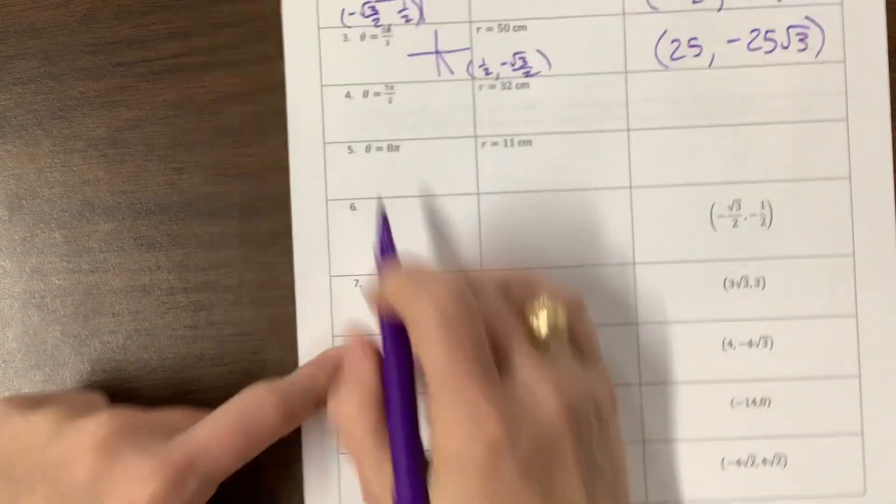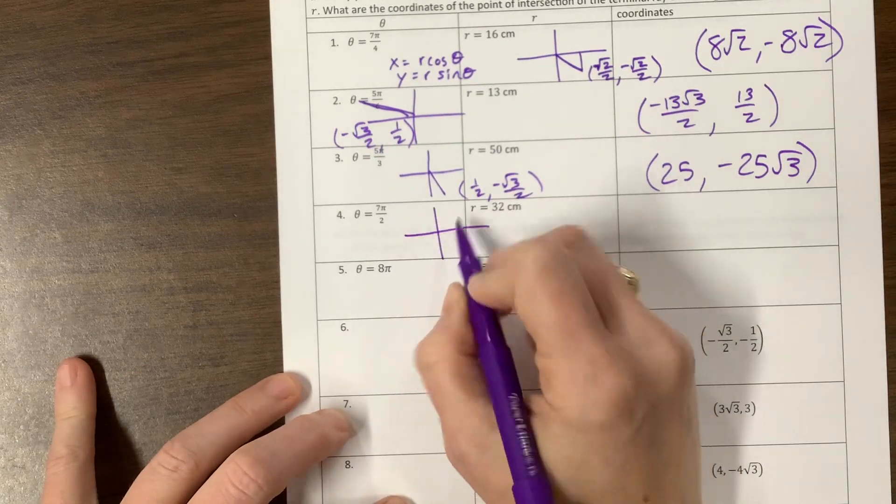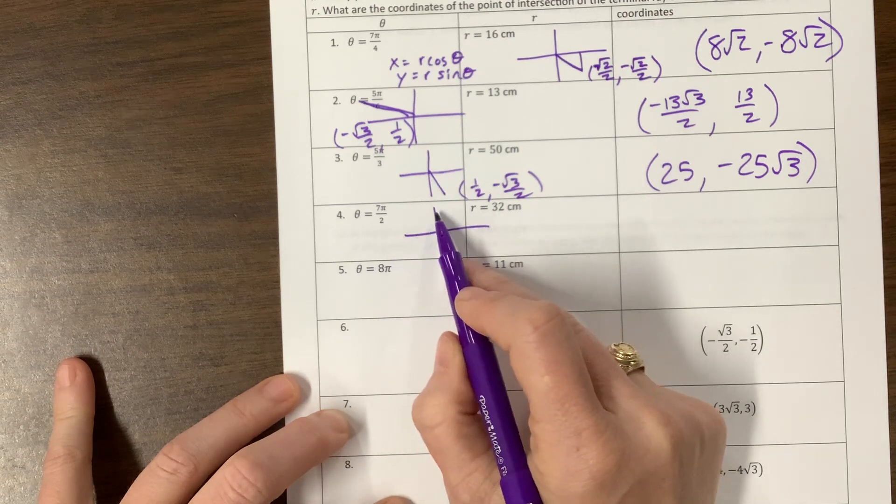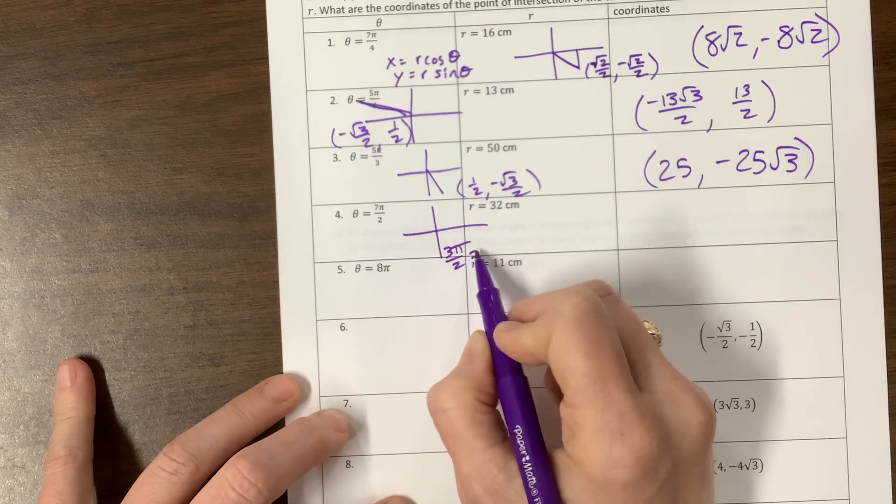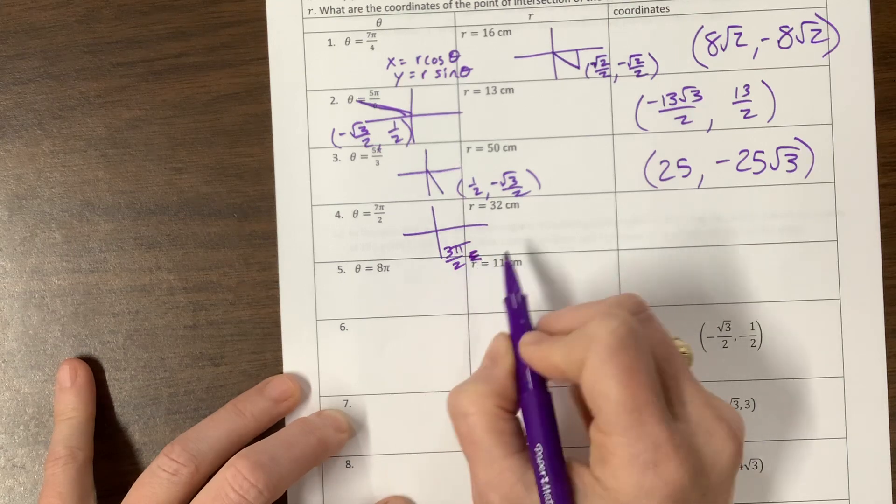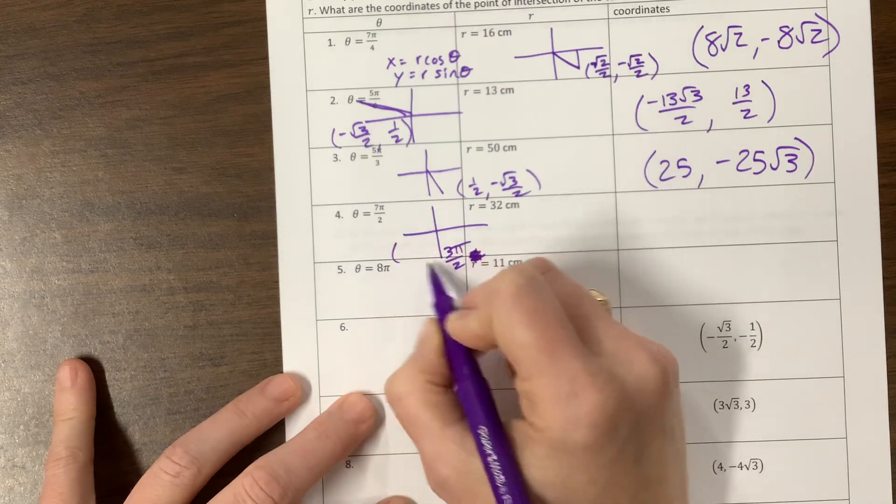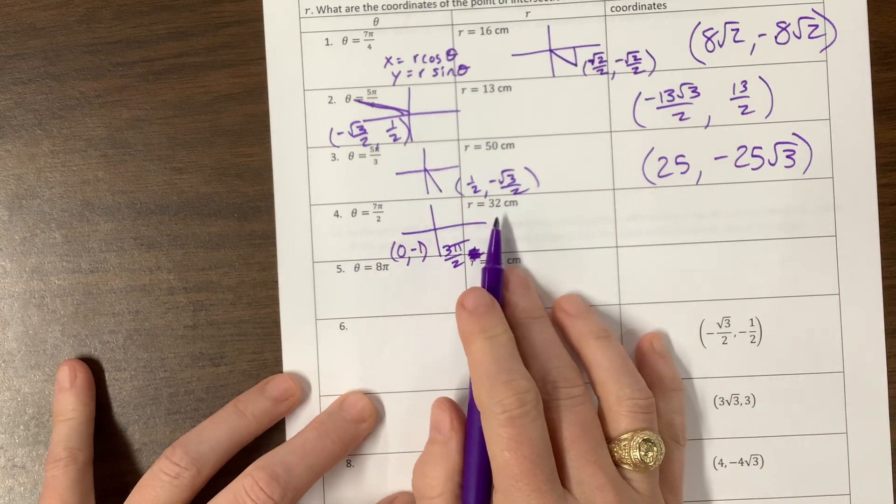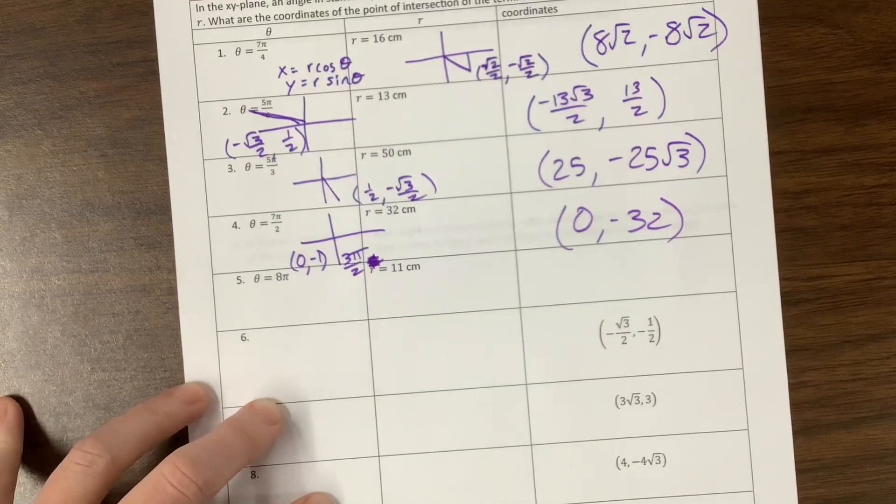So 7π/2—this is π/2, 2π/2, 3π/2, 4π/2, 5π/2, 6π/2, 7π/2. Three π/2 is coterminal to 7π/2. What are its coordinates? Well, its coordinates are 0, negative 1 typically, but now we have a new radius. We're going to multiply this by 32, so we have 0, negative 32.